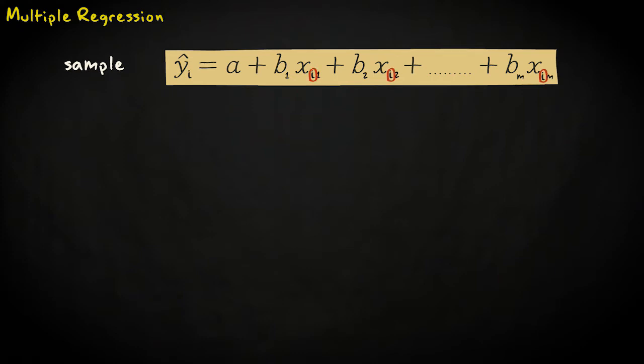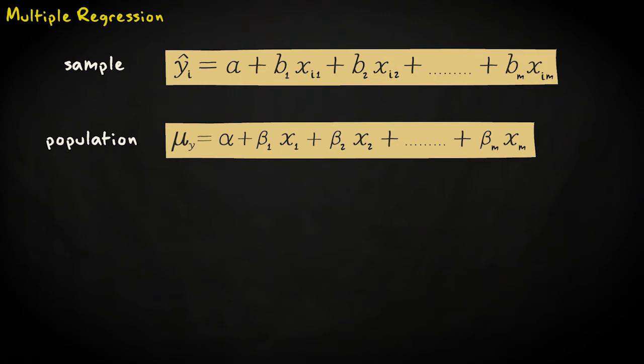Note that the sub i's indicate that y and the x's stand for individual values. At the population level, we express the model as mu sub i equals alpha plus beta sub 1 times x sub 1 plus beta sub 2 times x sub 2, and so on, ending with beta sub m times x sub m.